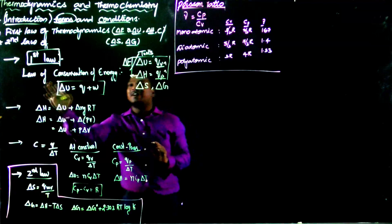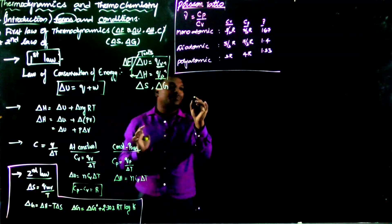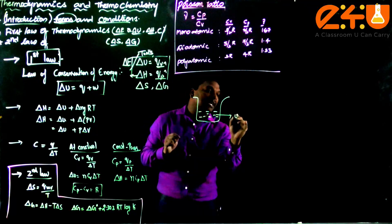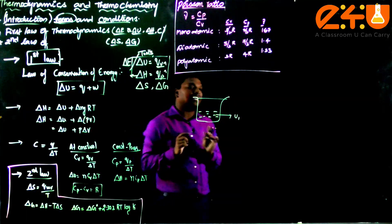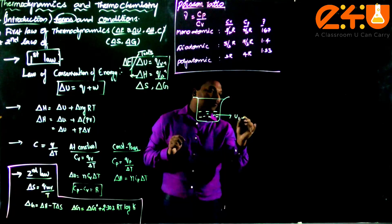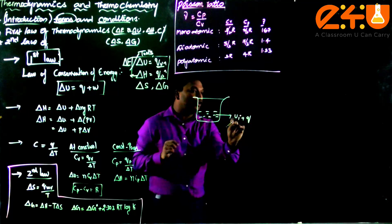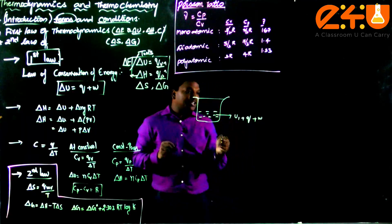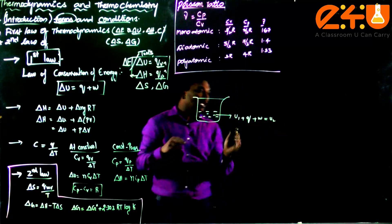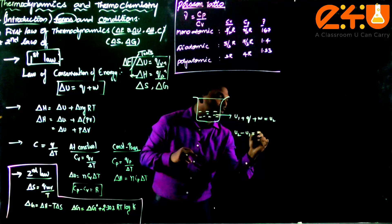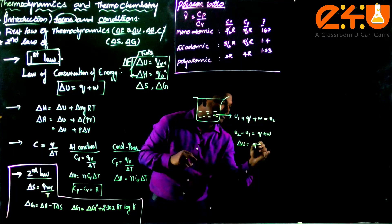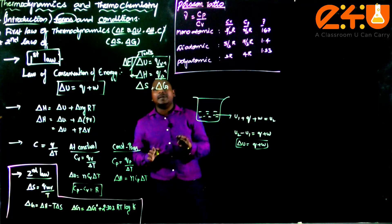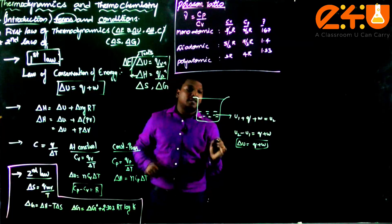To derive the First Law of Thermodynamics — the law of conservation of energy — consider a system with initial energy U1. Give the system q amount of heat (positive means given to the system) and do w amount of work on the system. The energy changes to U2, so U2 minus U1 equals q plus w, giving us ΔU = q + w. Energy can neither be created nor destroyed, but converted from one form to another.